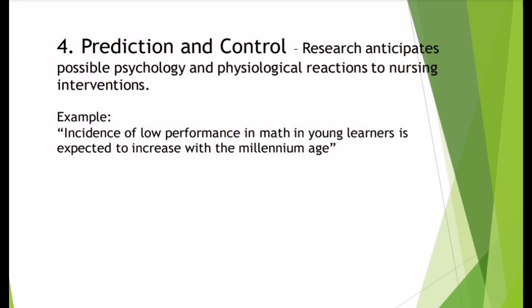They were able to describe what the problem is all about, and they were able to explore into that problem, and they can explain why. And because of that, the research will help us control what we need to do in order to control the low performance in math among young learners. We will not let it happen because we know that in the millennium age, there will be a low performance in math among young learners.